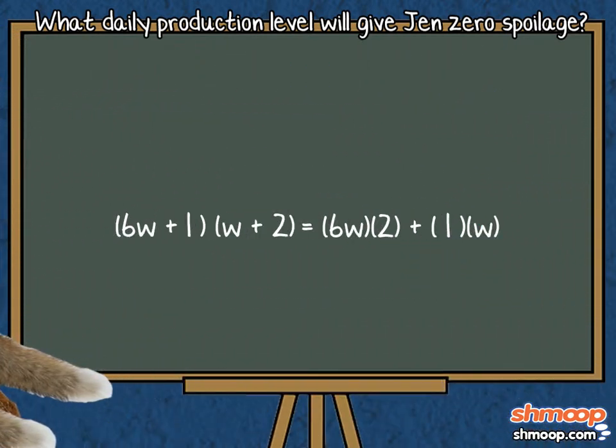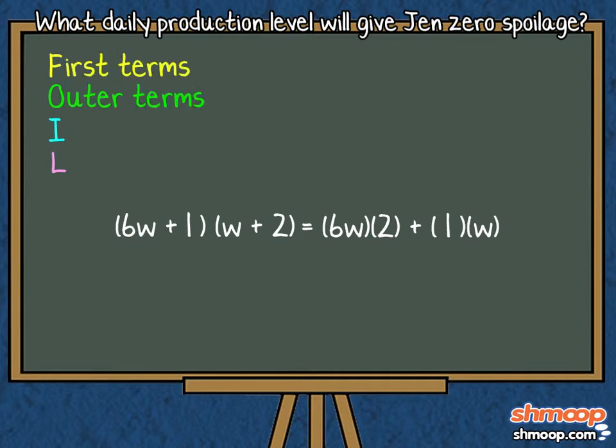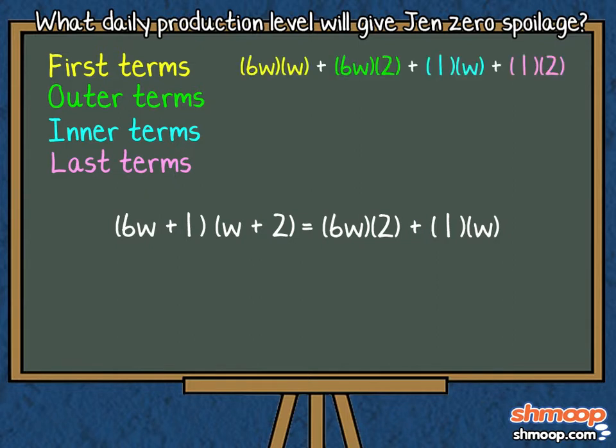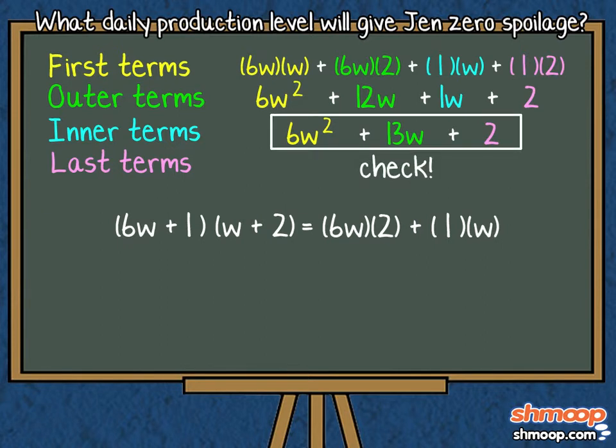Our work can be checked using FOIL. Multiplying out the first terms, outer terms, inner terms, and last terms. We add them together and check to see that they equal our original trinomial. Yep, we pass the checkpoint.